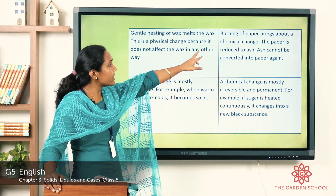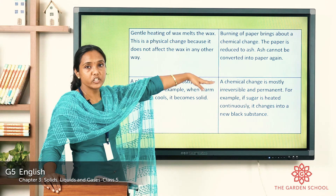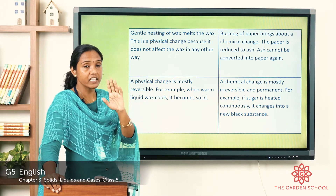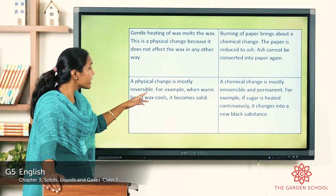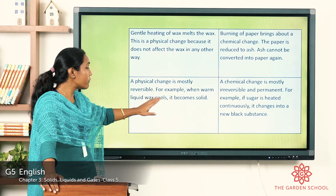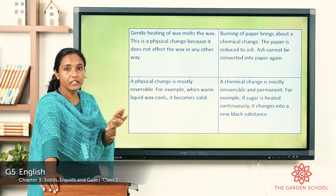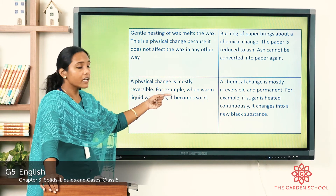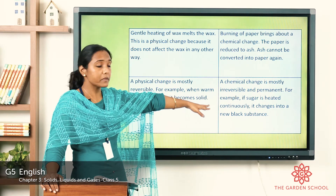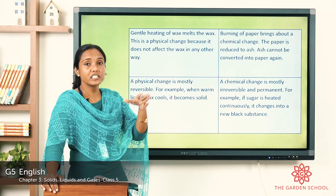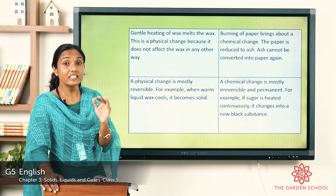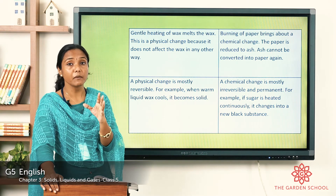In a chemical change, burning of paper brings about a chemical change because the paper is reduced to ash and ash cannot be converted back into paper. A physical change is mostly reversible — for example, when warm liquid wax cools it becomes solid again. But a chemical change is mostly irreversible and permanent — for example, if sugar is heated continuously it changes into a new black substance that cannot be reversed. That is a chemical change.